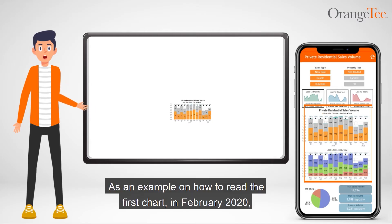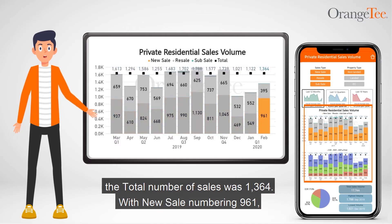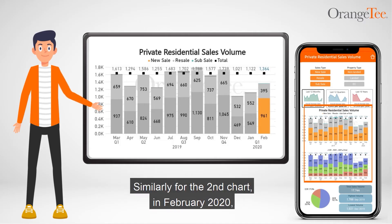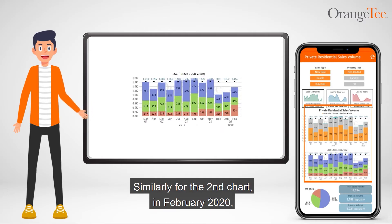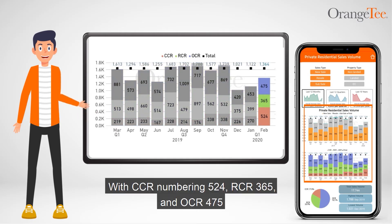As an example on how to read the first chart, in February 2020, the total number of sales was 1,364, with new sale numbering 961, resale 395, and a very small number of sub sale. Similarly for the second chart, in February 2020, the total number of sales was still 1,364, with CCR numbering 524, RCR 365, and OCR 475.